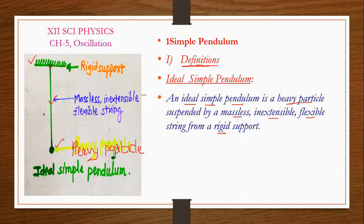What is the definition of ideal simple pendulum? An ideal simple pendulum is a heavy particle suspended by a massless, inextensible, and flexible string from a rigid support. This is the definition of ideal simple pendulum.